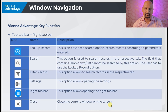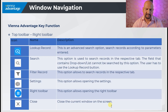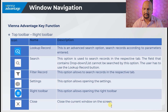The next toolbar is available on the right side — it is the right toolbar, located at the right side at the top of the window. The first button is the lookup record, which is an advanced search option used to search records by entering respective parameters or search criteria.